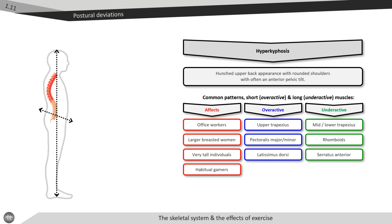Joint mechanics, as shown in the image, include increased cervical extension, scapular protraction and elevation, with decreased shoulder extension and shoulder external rotation. To improve hyperkyphotic posture, we need to lengthen the pectoral muscles and strengthen the lower trapezius and rhomboid musculature.